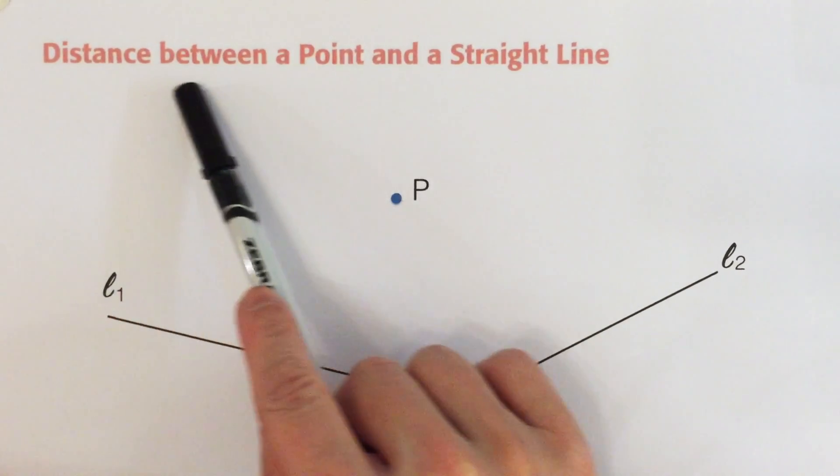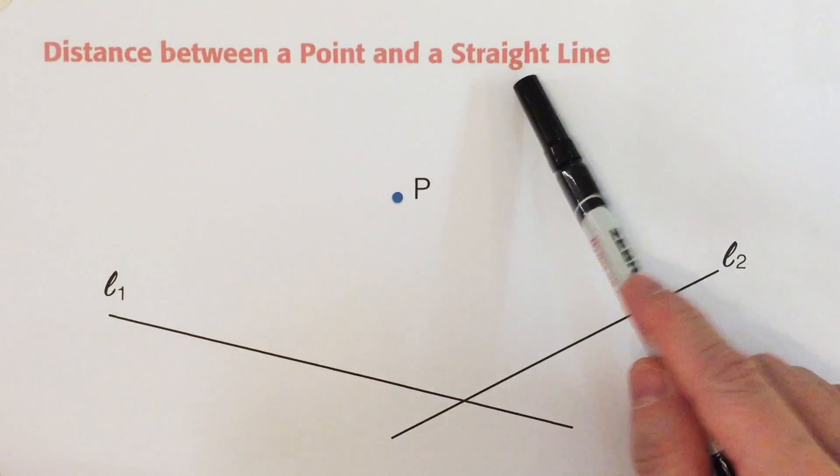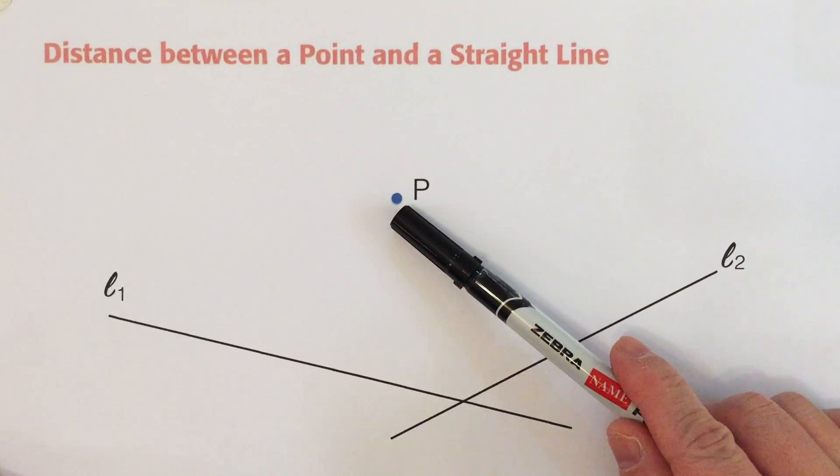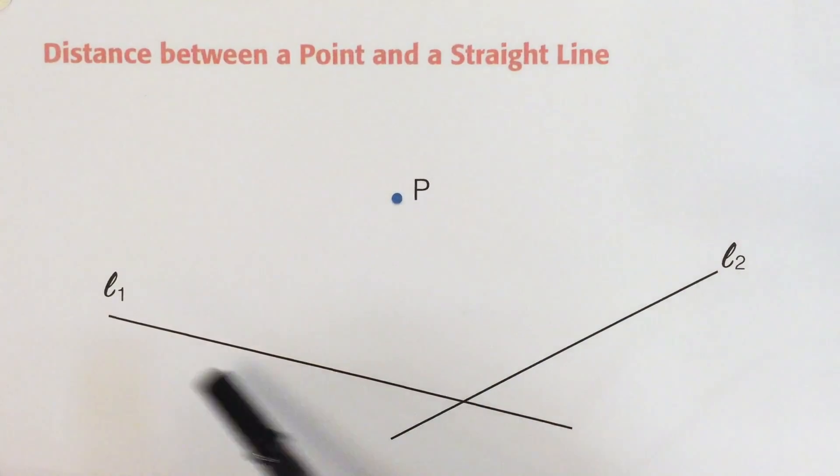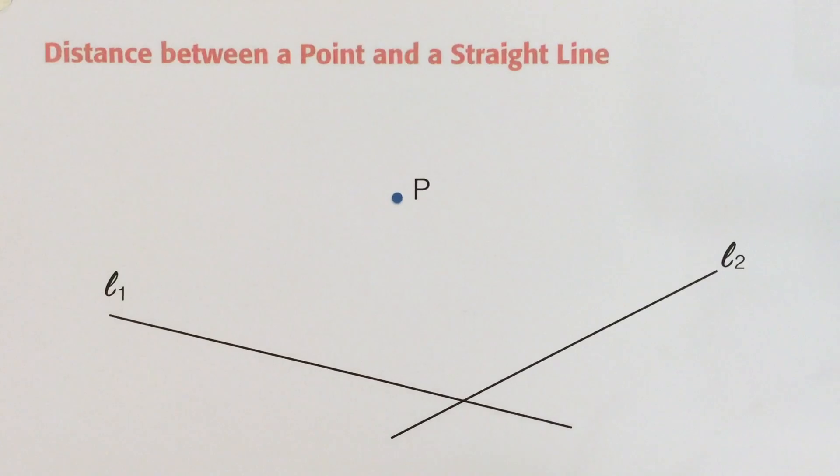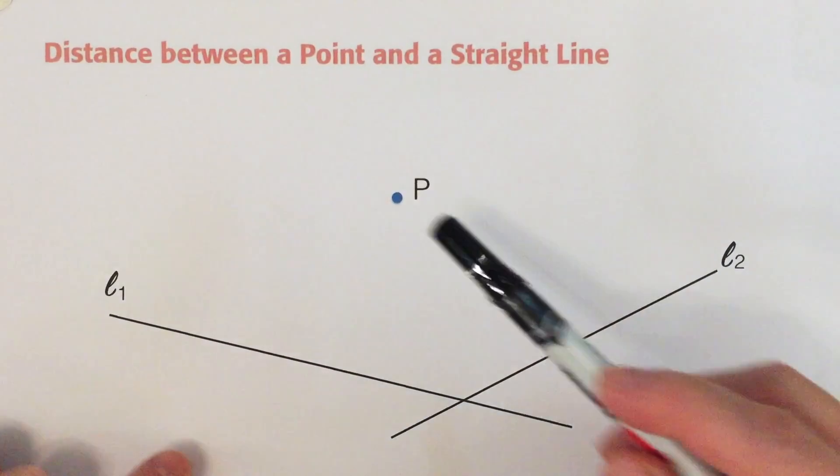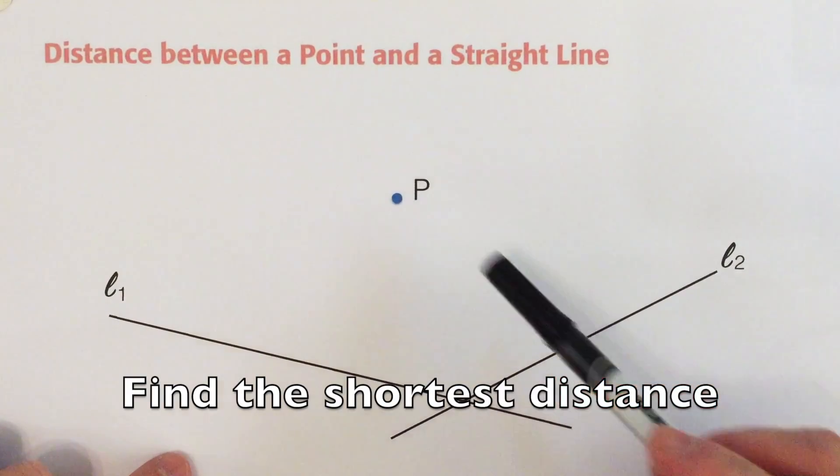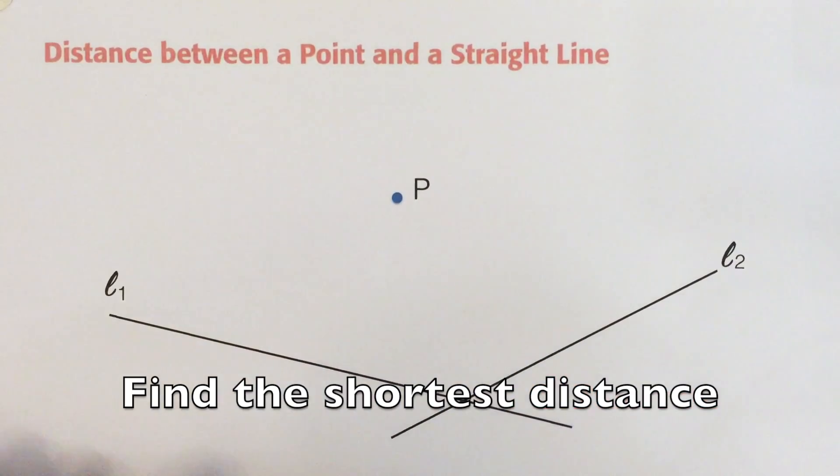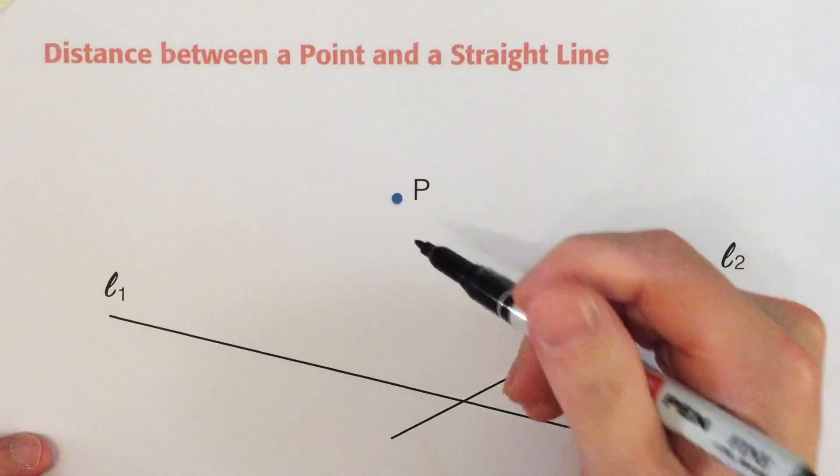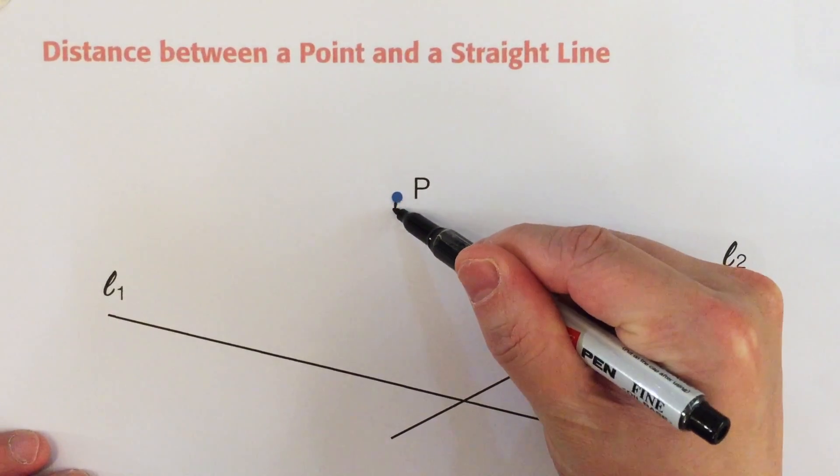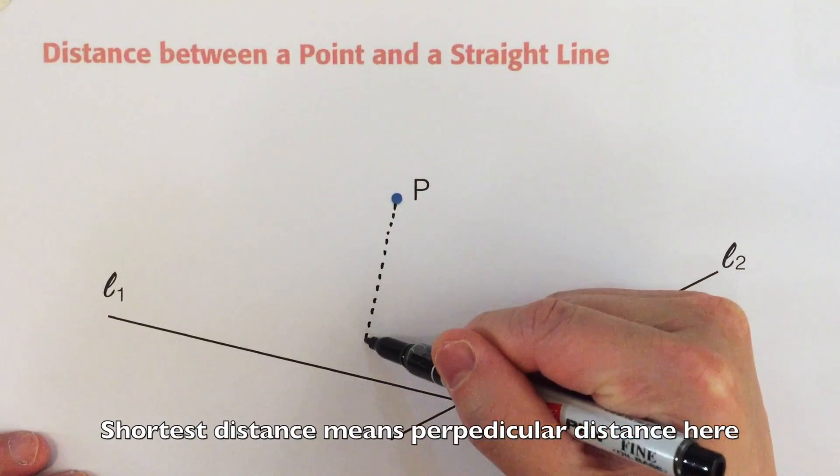Okay, finding the distance between a point and a straight line. For example, we are going to find the distance of this point P from the line L1. So the definition is we have to find the shortest distance of the point P from L1, and the shortest distance is always the perpendicular distance.